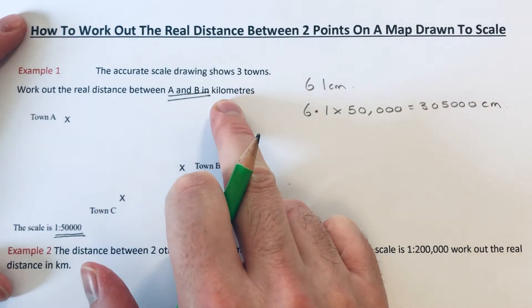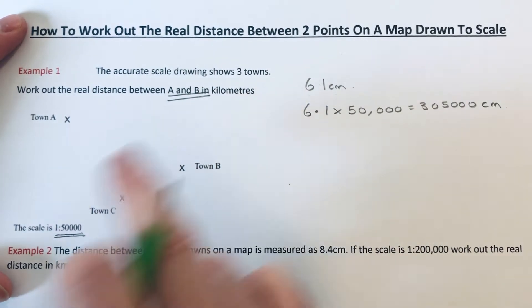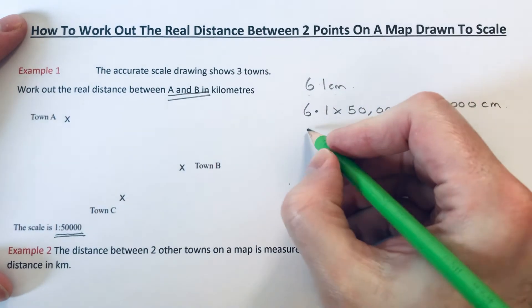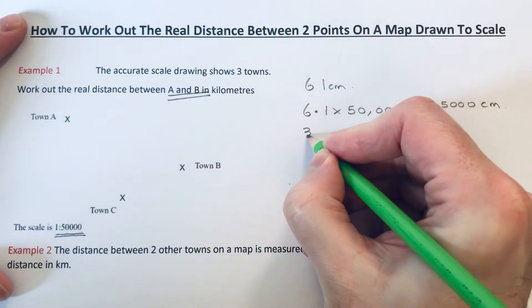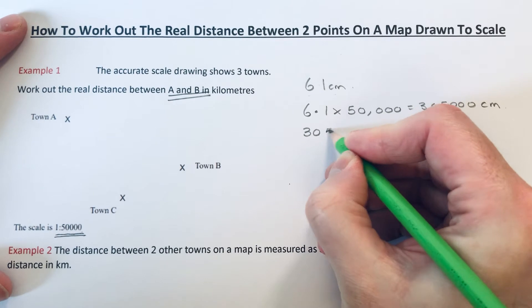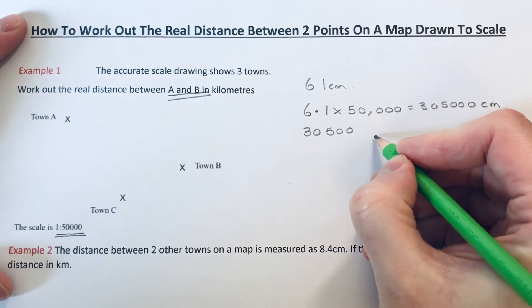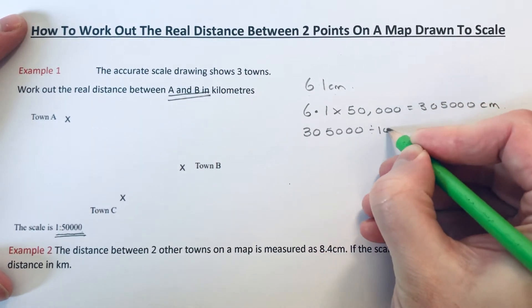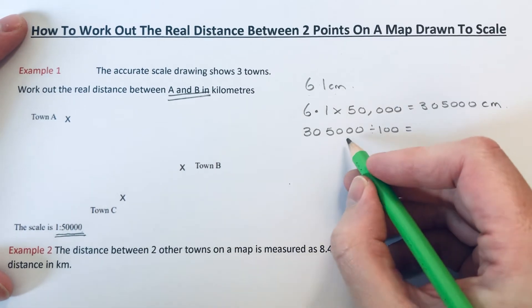We now need to convert this answer back into kilometers. First, I'd like to convert it into meters by dividing it by 100 because there's 100 centimeters in a meter. If we divide that by 100, we get 3,050.